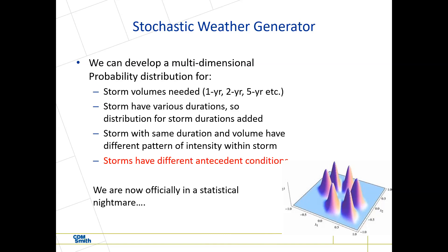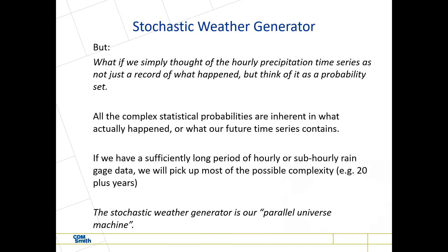We thought: why not simply think of the hourly precipitation time series not just as a record of what happened, but as a probability set? What happened contains a whole range of different storms, and all the complex statistical probabilities I described are actually inherent in that data set. If we have a sufficiently long period of hourly or sub-hourly rainfall — which we do in Philadelphia — we will capture most of the possible complexity of those rainfall events and their statistical distributions. This becomes the approach to our stochastic weather generator.